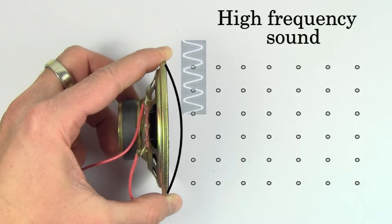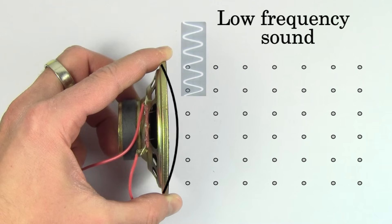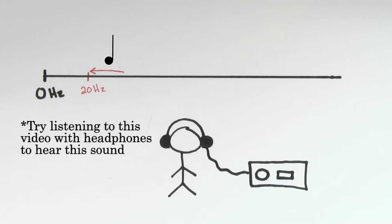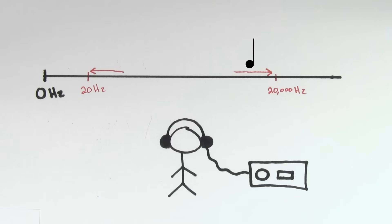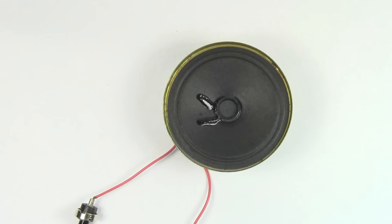Higher notes have higher frequencies, and lower notes have lower frequencies. Humans can hear frequencies as low as about 20 hertz and as high as about 20,000 hertz. But if a speaker were to oscillate air back and forth more than about 20,000 times per second, it would create sound waves, but we wouldn't be able to hear them.